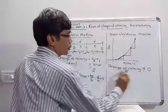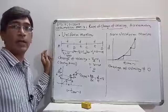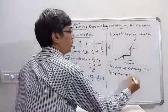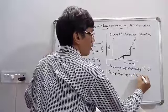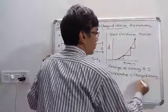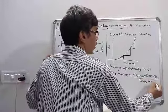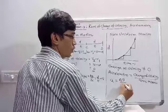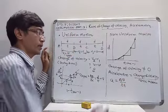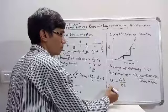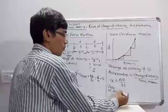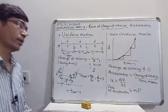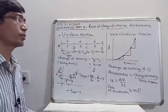If you take the change of velocity in a given time interval, we get another quantity known as acceleration. Acceleration is given by change of velocity divided by time taken: a = ΔV / ΔT. The unit of acceleration is meter per second square or centimeter per second square. It is the rate of change of velocity.